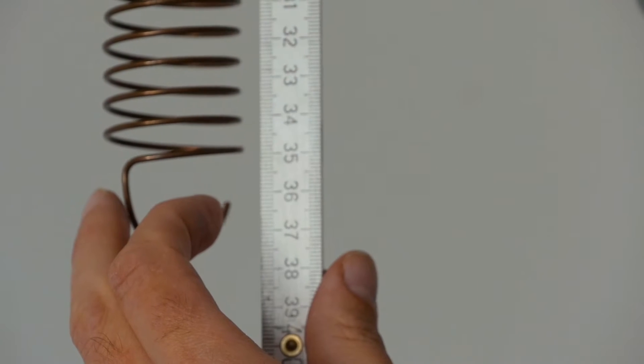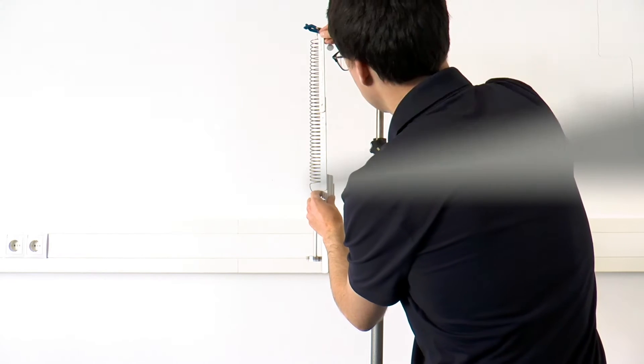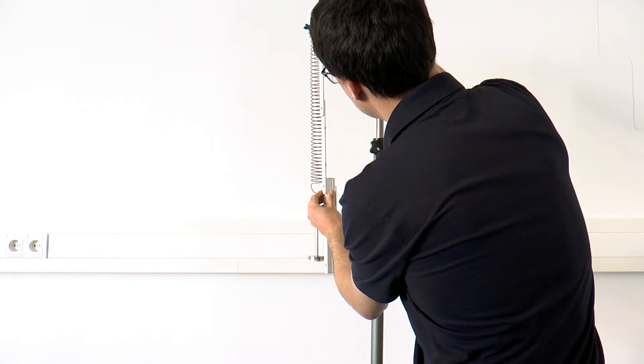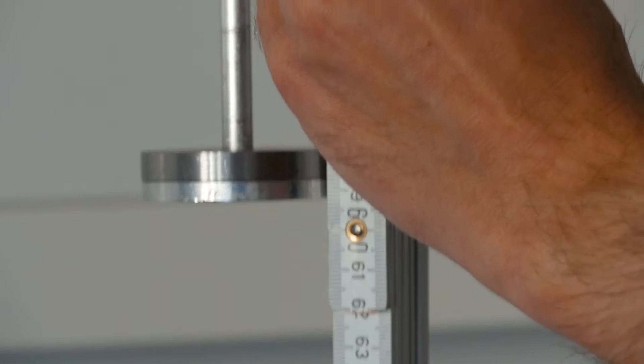In doing so, we should pay attention to what the accuracy of the measurement is and where possible systematic errors can occur. A weight is then attached to the spring and the new extension of the spring is measured three times. This procedure is repeated for a total of four different weights.